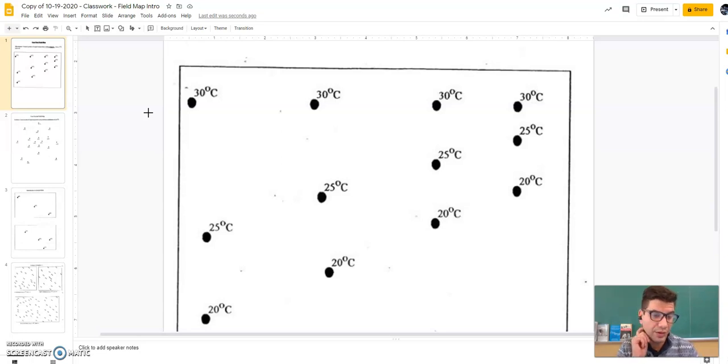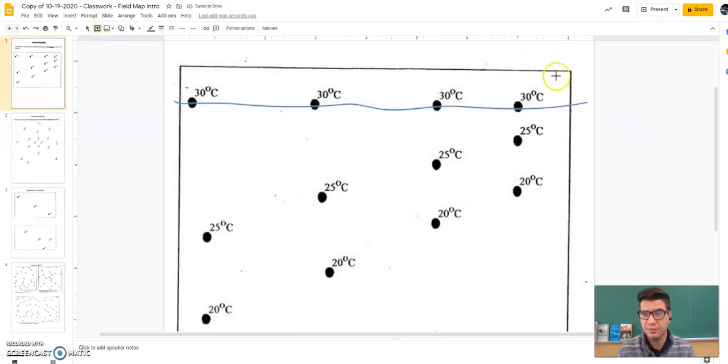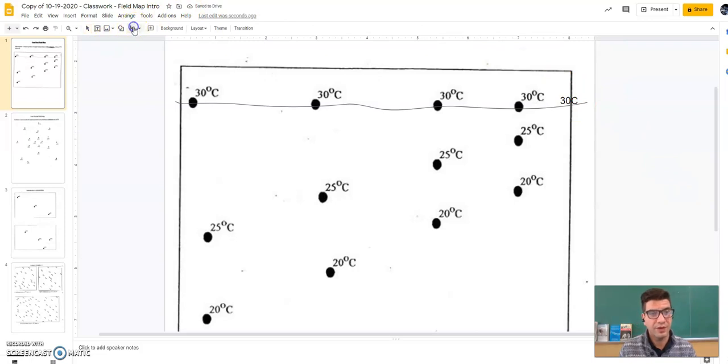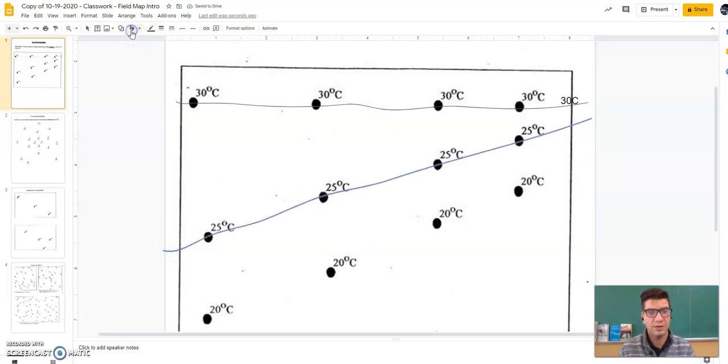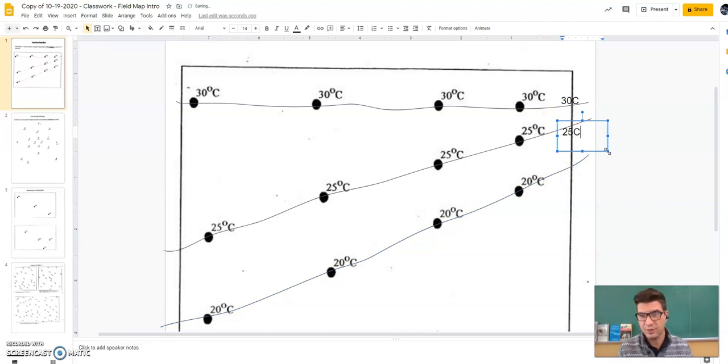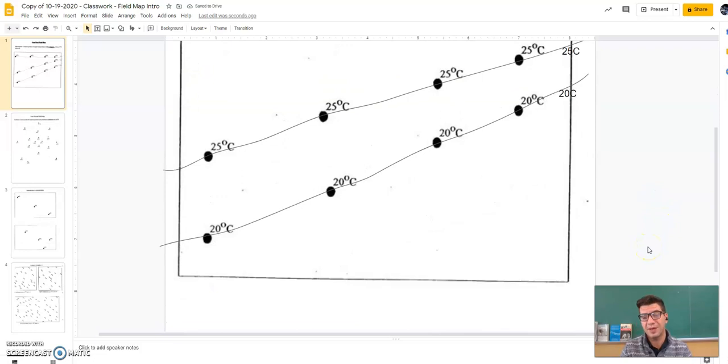If you remember the rules that we spoke about for drawing iso lines and field maps, you always need to leave the box or go off the page. So, I'm going to start over here. I'm going to draw a line that goes straight through each of these 30s and then exit off the side. I need to label it. And this one is 30C. I need to do the same thing for my 25 and then I need to do the same thing for the 20. Try to be neat. Try to go slow. I've got to make sure everything is labeled. Second field map is done.